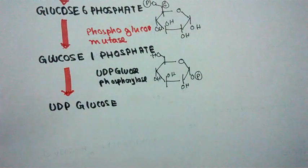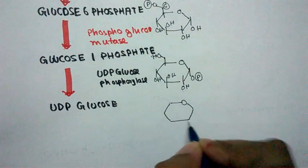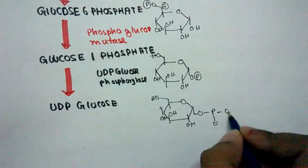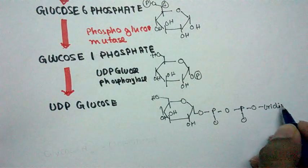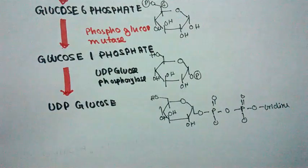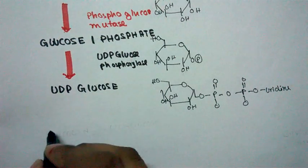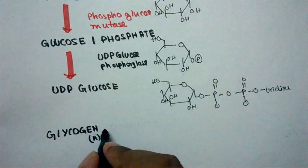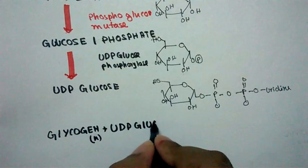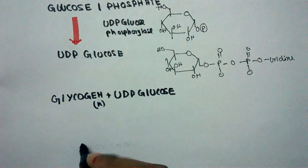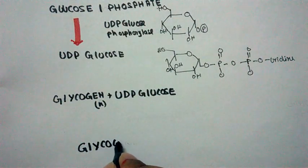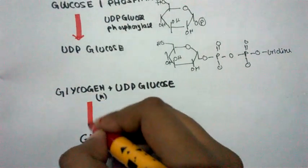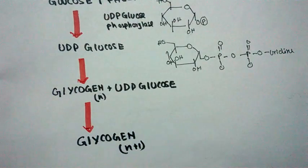So now it would be converted into UDP-glucose. UDP-glucose has a uridine moiety attached and it looks like this. UDP-glucose is very important for addition into a preformed glycogen polymer. We denote the preformed glycogen polymer as 'n', and UDP-glucose attaches to it to ultimately form glycogen, increasing the chain by one residue.